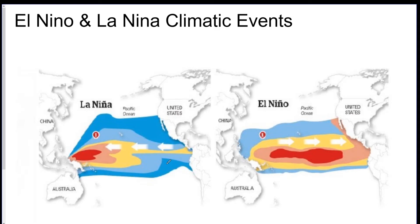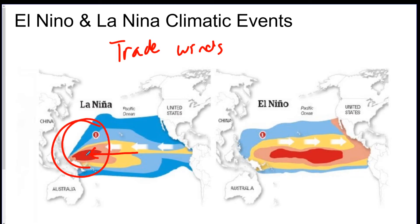The next thing is El Niño and La Niña — it's a climatic event. All you need to know is that it has to do with the trade winds, which are the winds that blow near the equator. Sometimes the trade winds are strong and sometimes they're weak. If they're stronger, they move warm water over toward Australia, causing a lot of rain. If they're weaker, that warm water doesn't make it there, causing different climate. They call it El Niño and La Niña — they are climatic shifts related to wind strength.